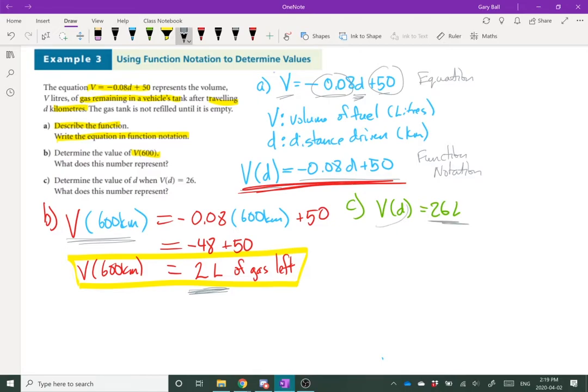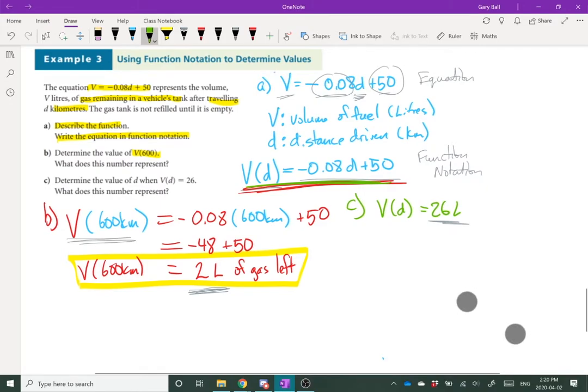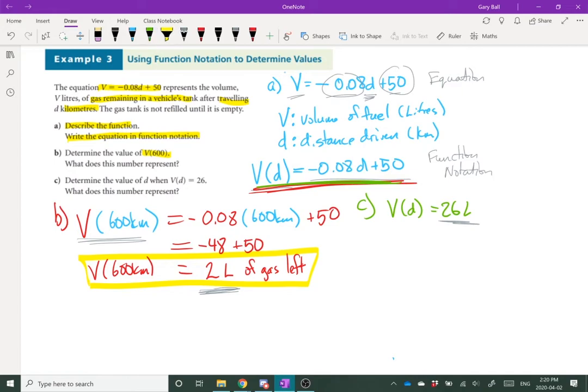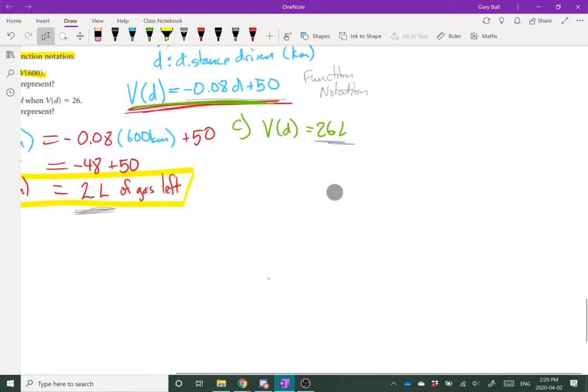So let's write it out. I'm going to use this basic equation right here. So this time, I know my answer is 26 liters. Equals. I've got negative 0.08. This time, I don't know what D is, so I'm going to leave it in there as variable. Plus 50.